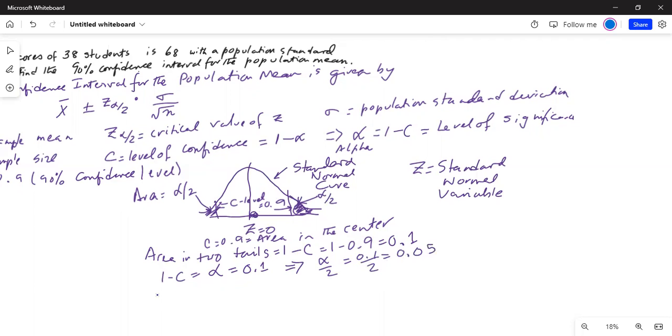Why do I need this information of alpha by 2? Because that will help me to find the critical value of z which is in the formula. This critical value is minus z alpha by 2 on the left and positive z alpha by 2 on the right. Area to the left of the critical value on the left tail is alpha by 2.